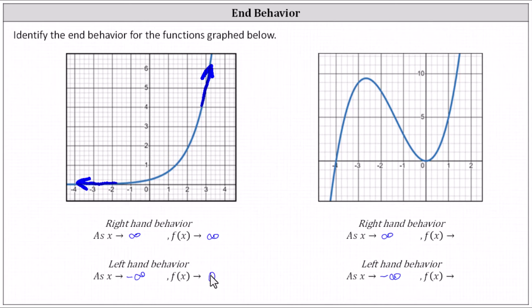For the last example, for the right-hand behavior, x is approaching infinity, or we are moving right along the function. As we move to the right, notice the graph goes up indefinitely, which indicates the y values are approaching positive infinity. The right-hand behavior is: as x approaches positive infinity, f of x approaches positive infinity.